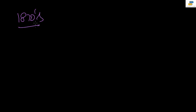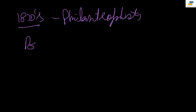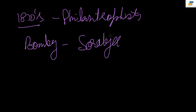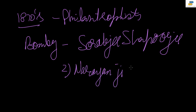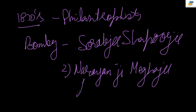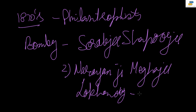Beginning in the 1870s, efforts to organize labor started as philanthropists came forward with money. In Bombay, there was Suraabji Shapurji and also Narayanji Meghaji Lokhande, who was very popular in Bombay and a great philanthropist. This person Narayanji Meghaji Lokhande was also involved in an Anglo-Marathi weekly called Deena Bandhu — meaning 'helper of the poor.'